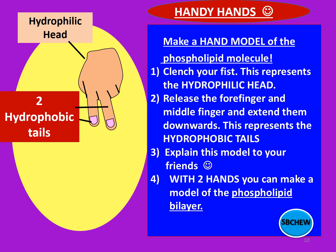You can make a hand model of the phospholipid molecule with your hands. First, clench the fist of one hand — this represents the hydrophilic head. Now release the forefinger and middle finger and extend them downwards — this represents the hydrophobic tails. You can use this model to explain to your friends the structure of the phospholipid molecule that has a hydrophilic water-loving head and hydrophobic water-repelling tails. With two hands joined together, you can make a model of the phospholipid bilayer. This is a fun activity that will help us remember the structure of the phospholipid bilayer.